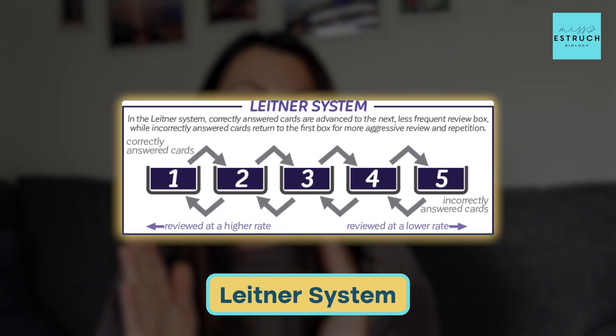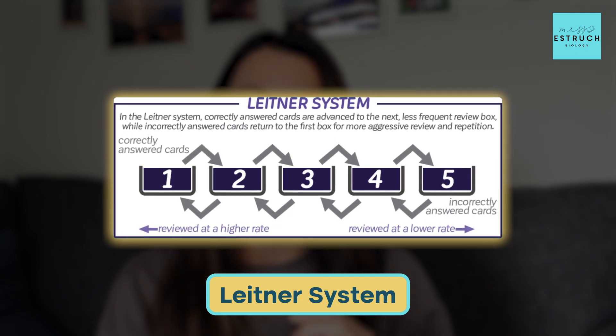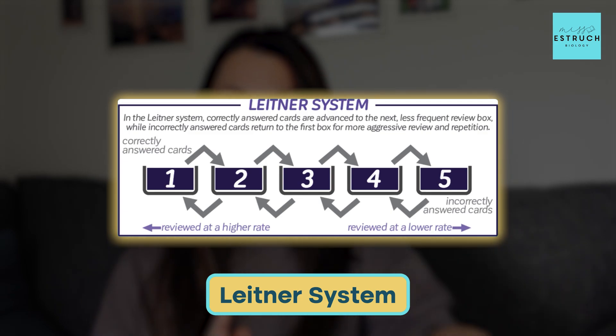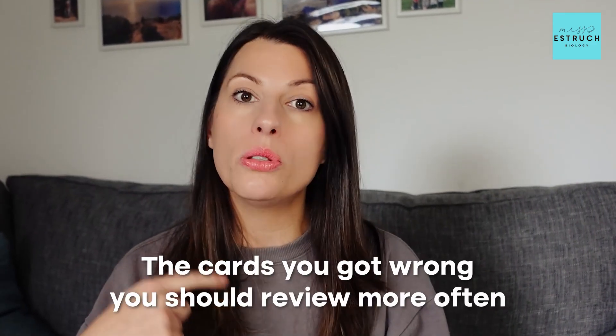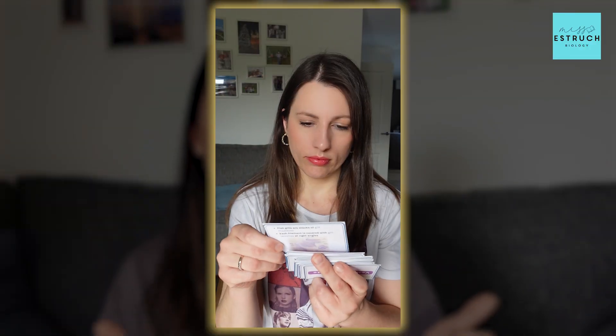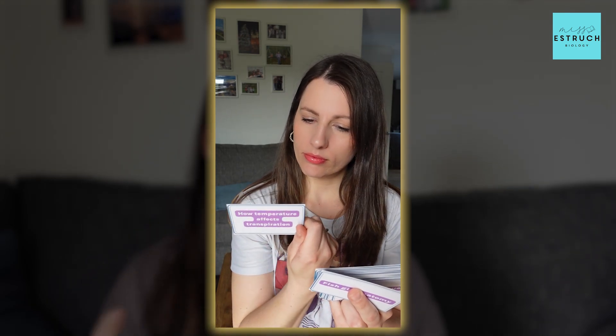To be really efficient with your time, you can use something called the Leitner system, where you don't do every single card every time. Instead, you split your cards into piles: cards you got correct and cards you got wrong. The cards you got wrong you review more often; the cards you got correct you review less often. In that way you are prioritising your time, spending more time on cards you didn't remember and improving your long-term memory of those, rather than spending lots of time on cards you already know.